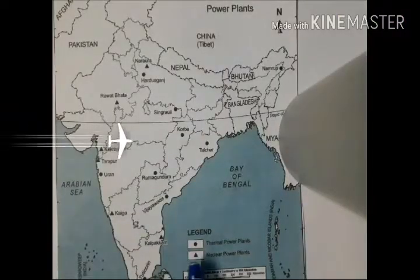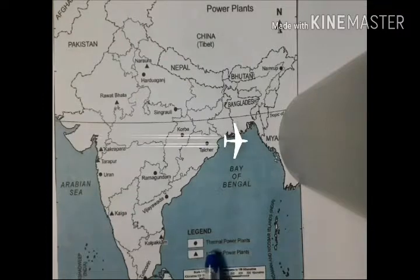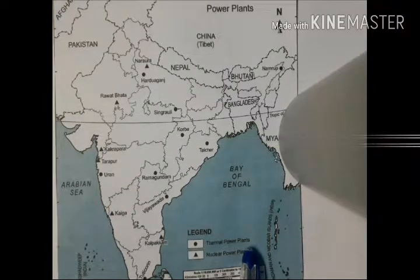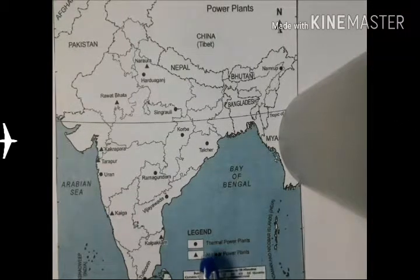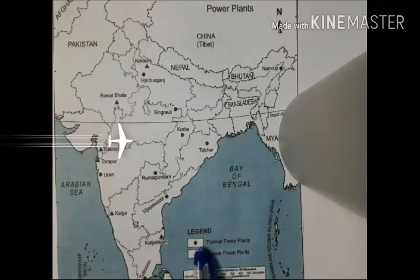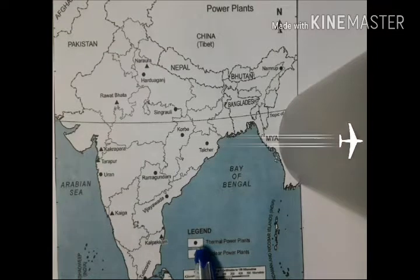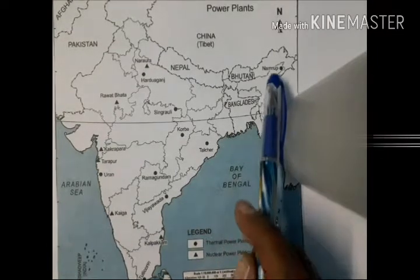Next is the Thermal Power Plant. It is indicated with a circle on the map.